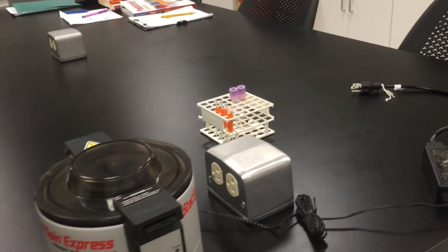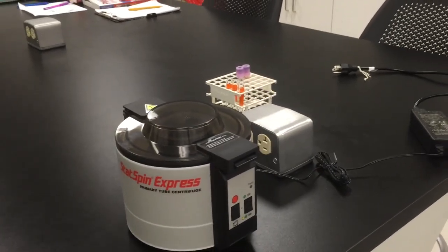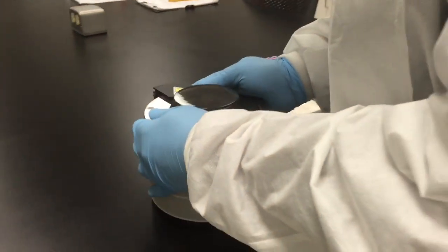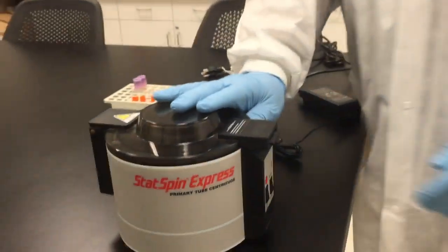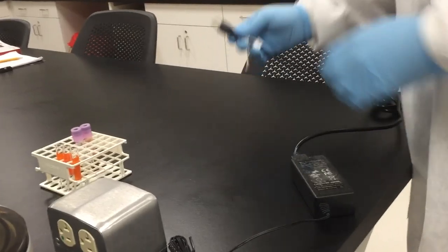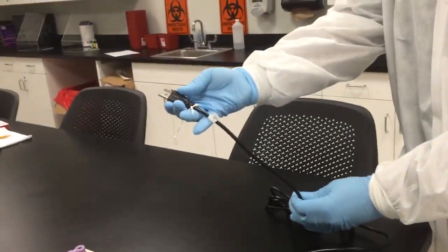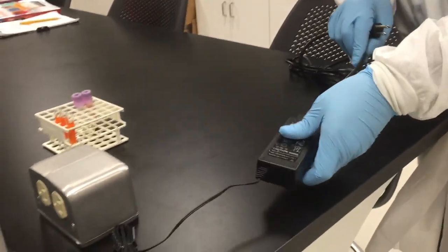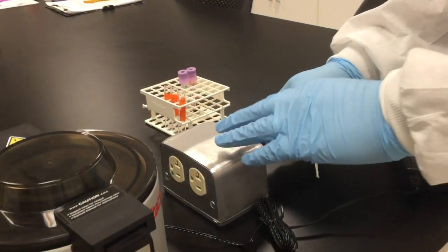First things first, you want to make sure that your equipment is in proper working order. So you're going to inspect everything. Make sure that it's clean, make sure that it's working, check your wires, make sure that they're not frayed. At this point, when everything checks out, you're going to plug in your centrifuge.